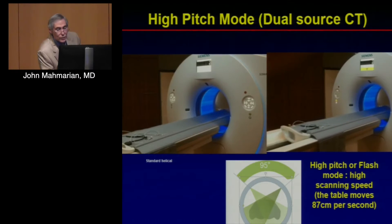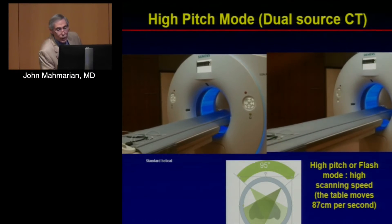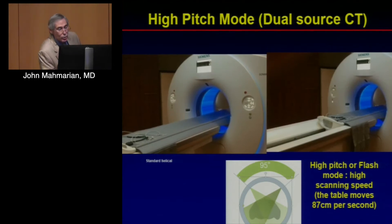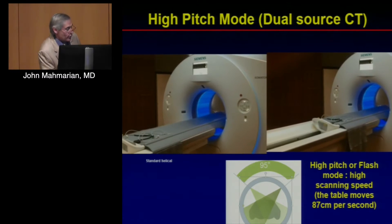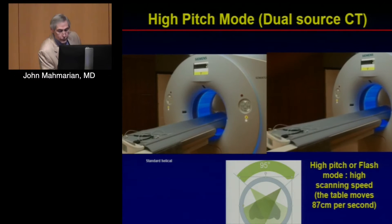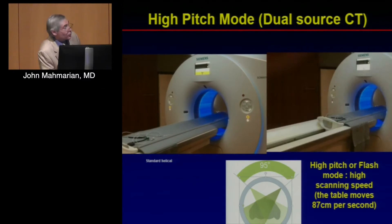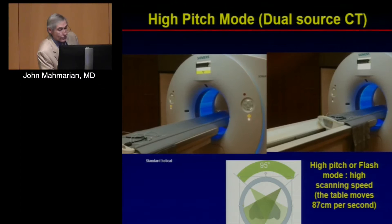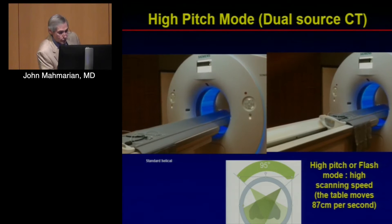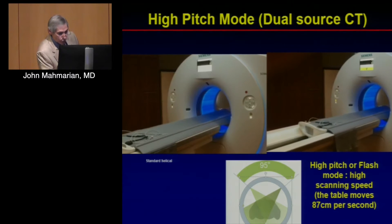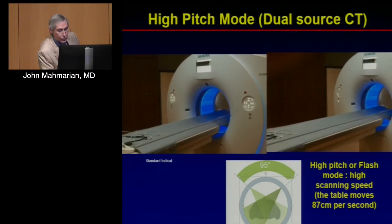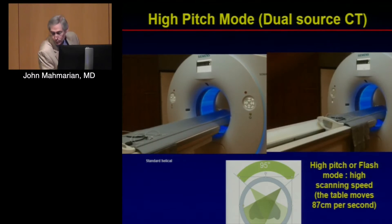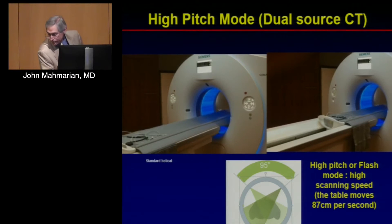The high flash mode is a very fast imaging modality, and that's what we typically use for our TAVR patients. On the left-hand side, a standard helical scan is shown, which is extremely slow by comparison.